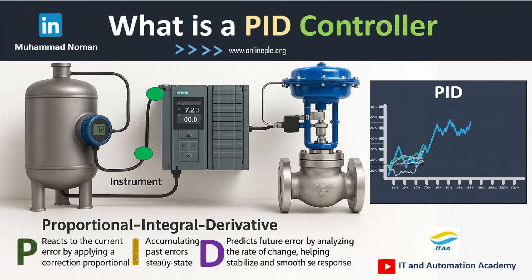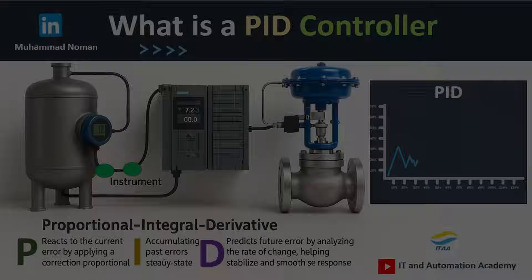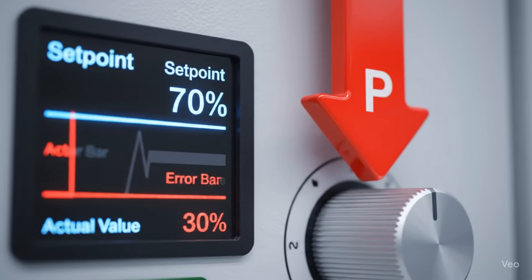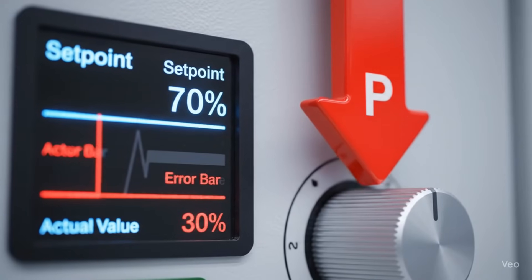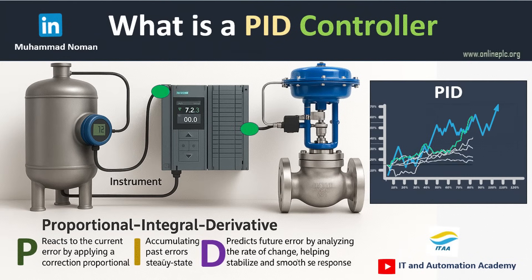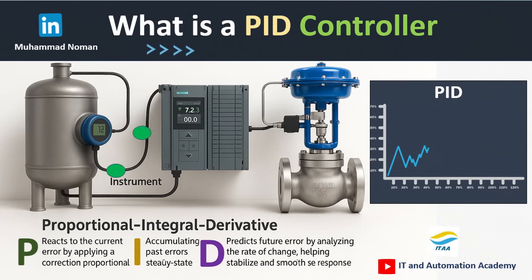PID basics. P — proportional — fixes the problem now. It reacts to the current error. The bigger the error, the stronger the fix. Fast response, but can overshoot.